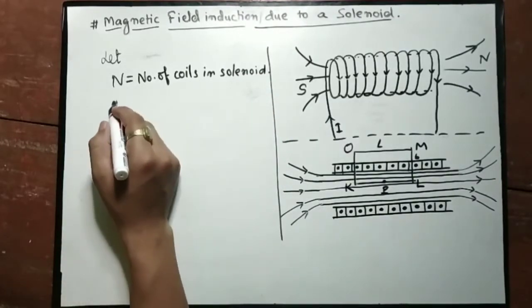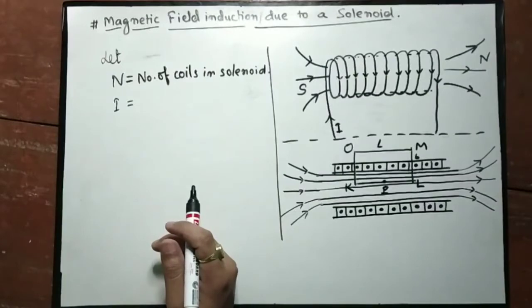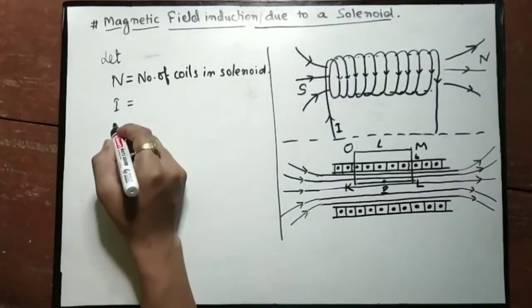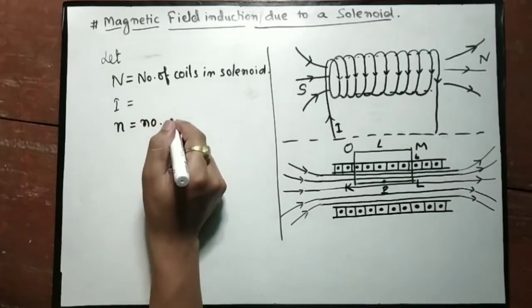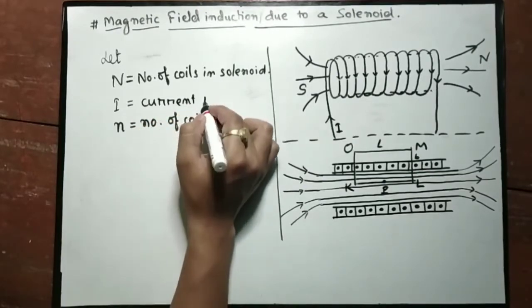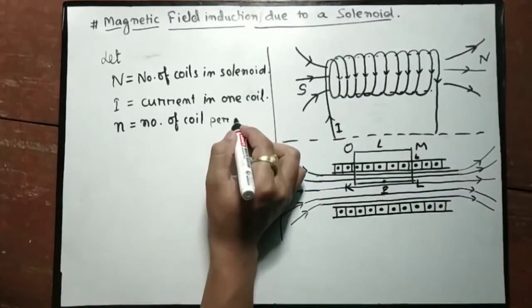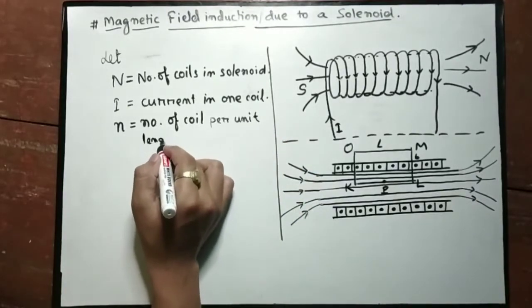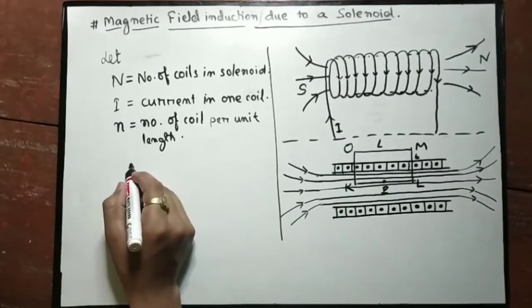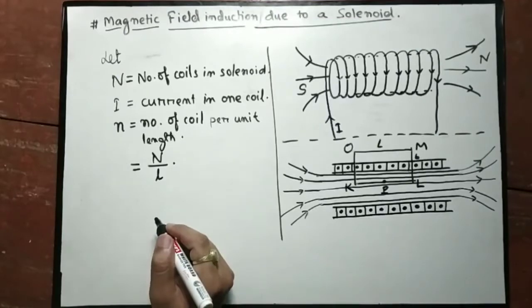N represents the total number of coils. I is the current in one coil. The number of coils per unit length is small n, which is the same as capital N divided by small l, where l is the length of the solenoid.